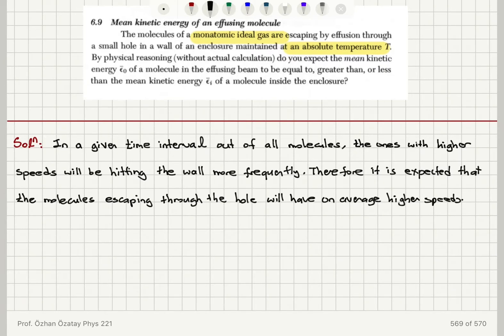So talking about the mean kinetic energy, therefore, since the kinetic energy is proportional to v square bar, because we're expecting that they will have on average higher speeds, if I call the kinetic energy of a molecule in the effusing beam epsilon 0 bar, this will be expected to be greater than the kinetic energy of a molecule inside the enclosure.